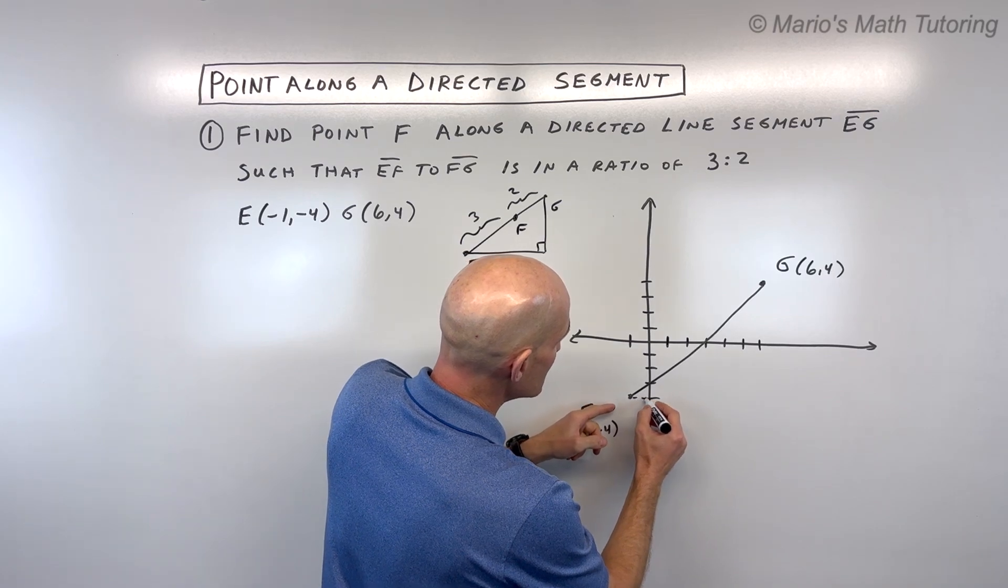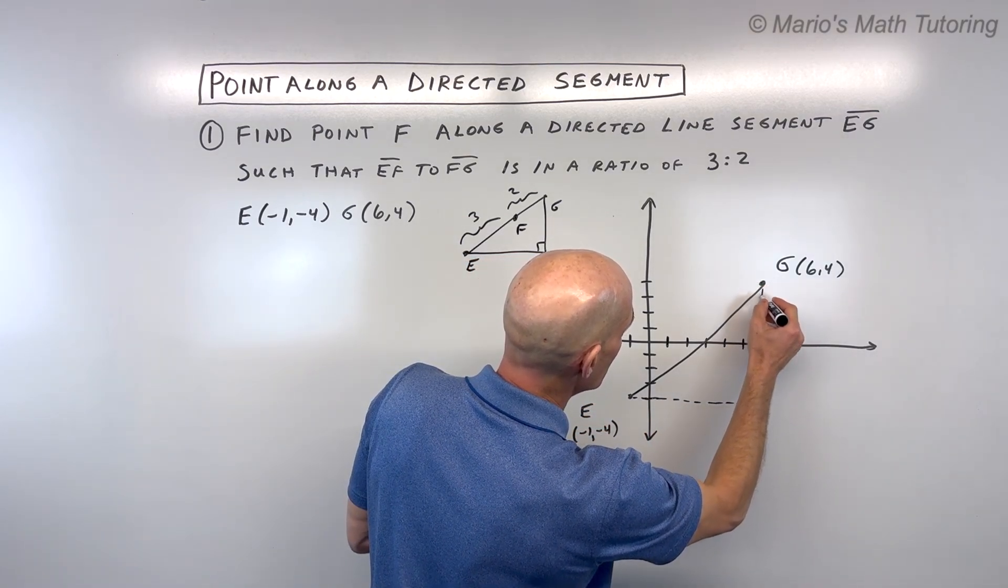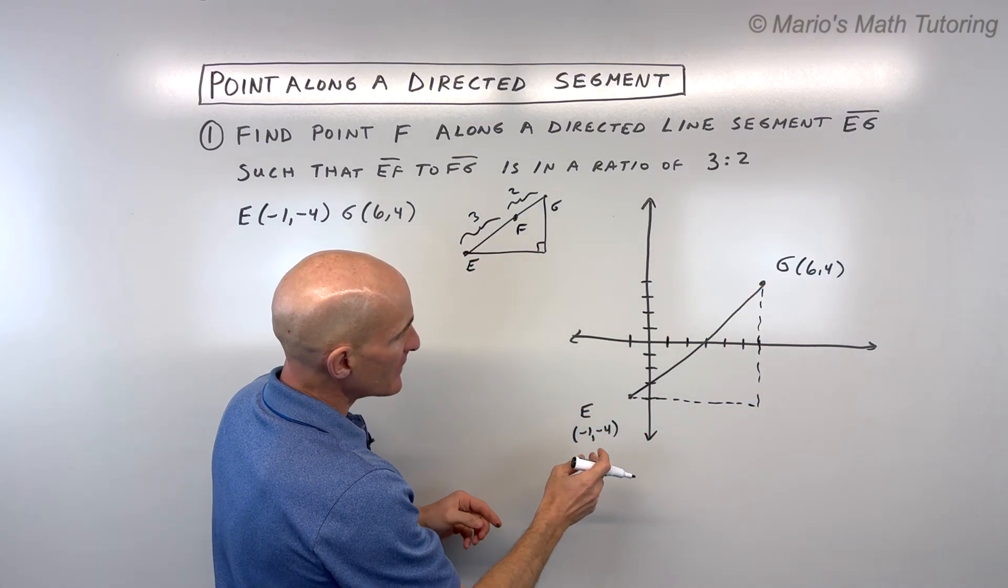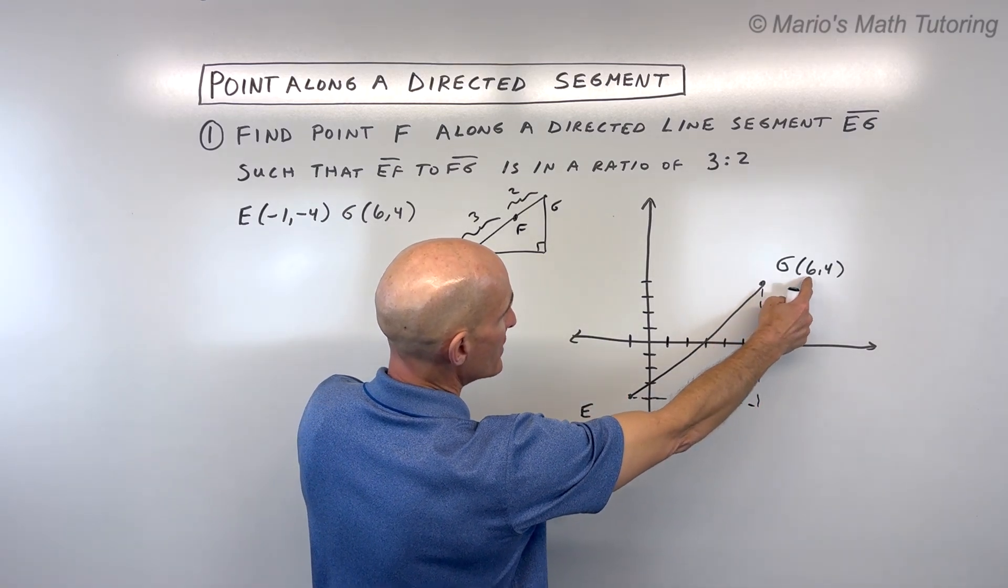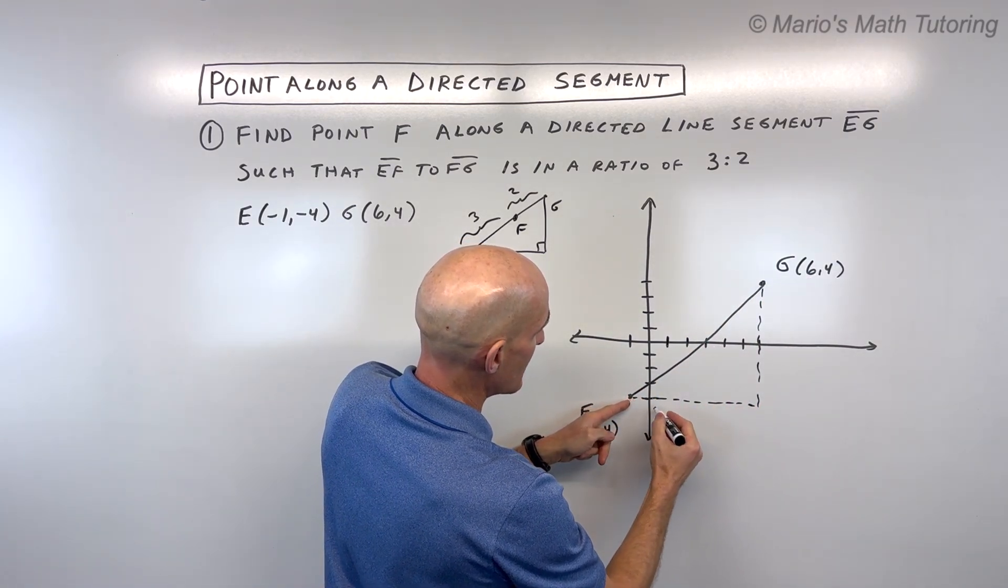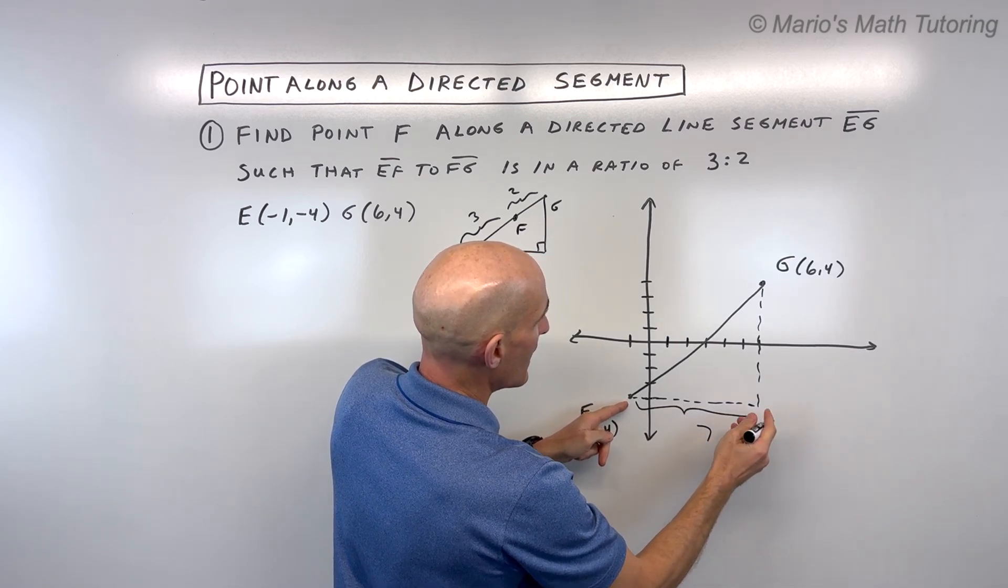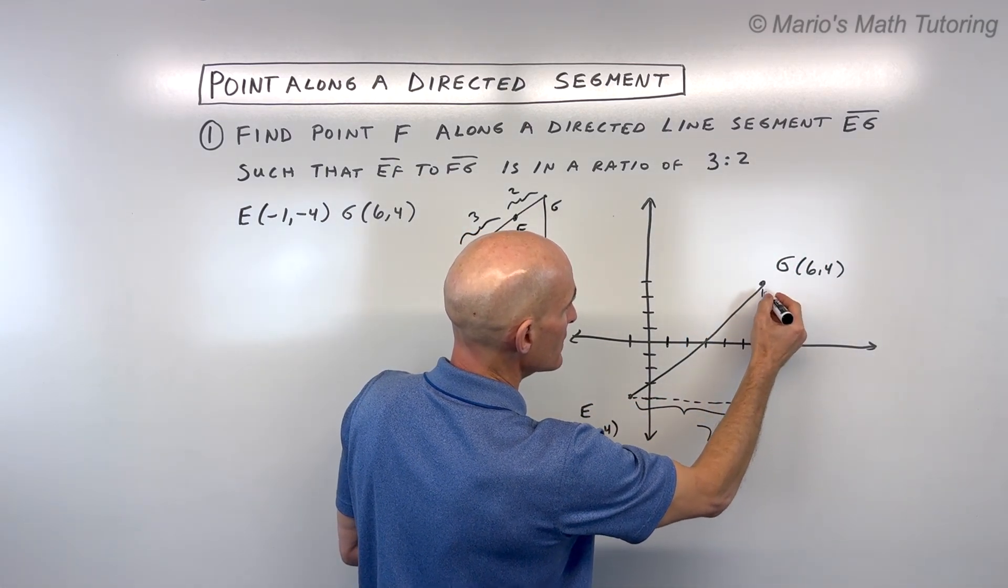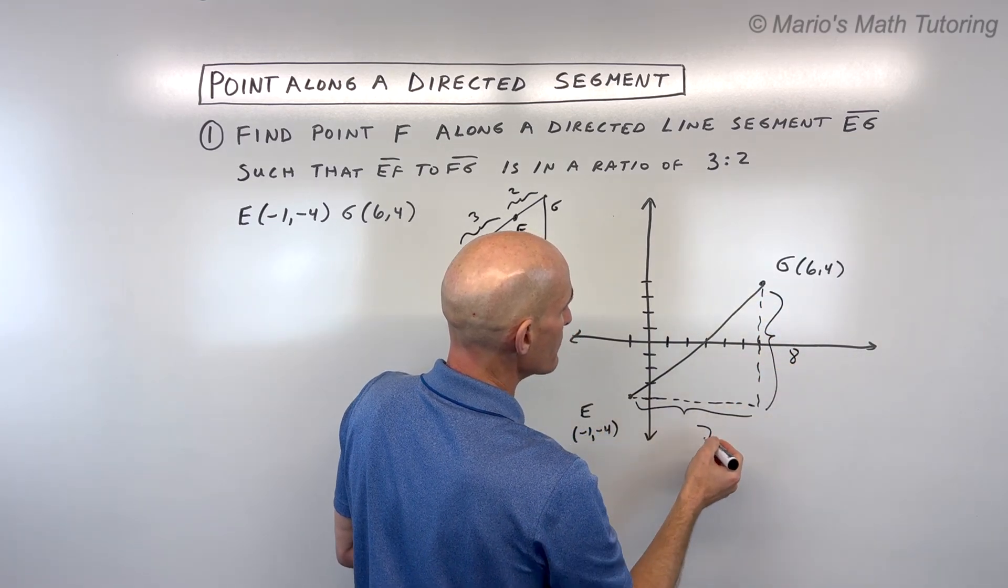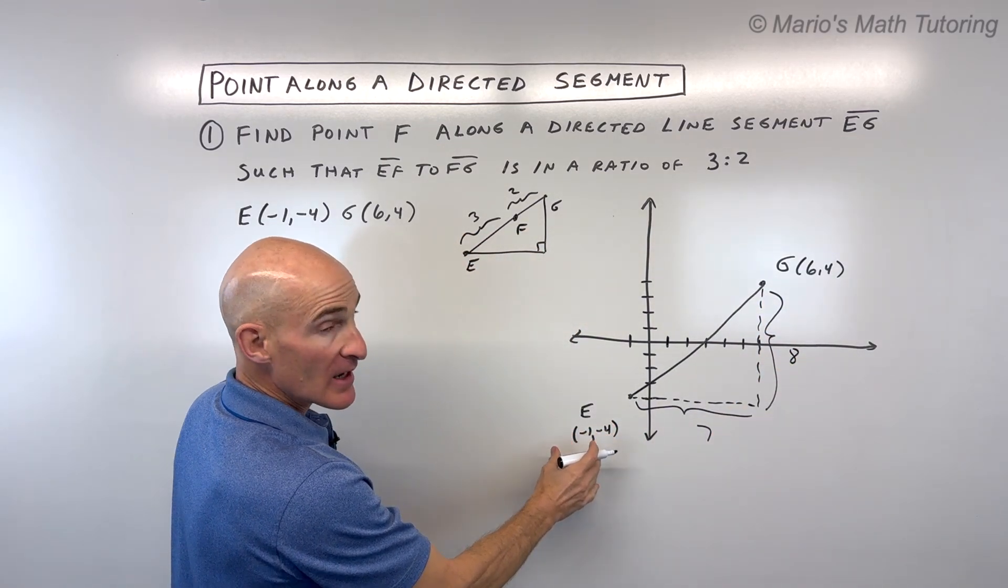I'm going to basically just kind of sketch this out here as a right triangle. And when we look at this horizontal distance here, how far is it? Well, we're going from negative 1 to 6. So this distance here is 7 units long. And then we're going from negative 4 up to positive 4. So this vertical distance here is 8 units long. But we're starting at this point, negative 1, negative 4.